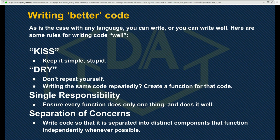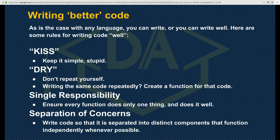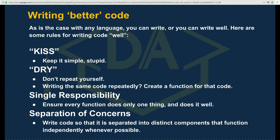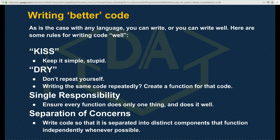There are some rules that apply across different programming languages. One is KISS — keep it simple, stupid. A lot of people like to be clever in programming and write code that maybe only they understand. At the end of the day, that ends up biting you in the future — maybe another programmer comes on the project and doesn't understand what you wrote, or you don't look at the project for six months and come back trying to figure it out.